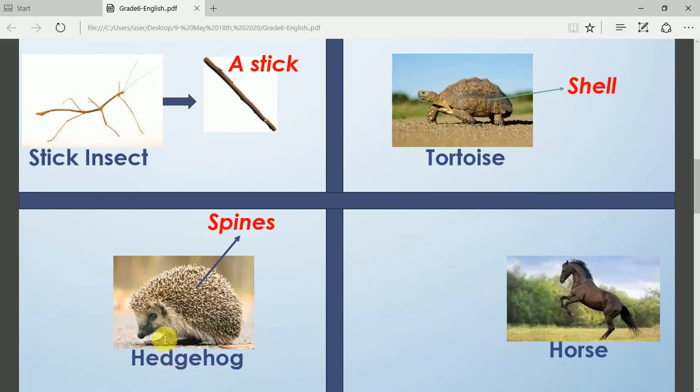This is a hedgehog. Animals don't like to come near the hedgehog because it has spines that are very sharp. These are spines. And we all know the horse, of course.